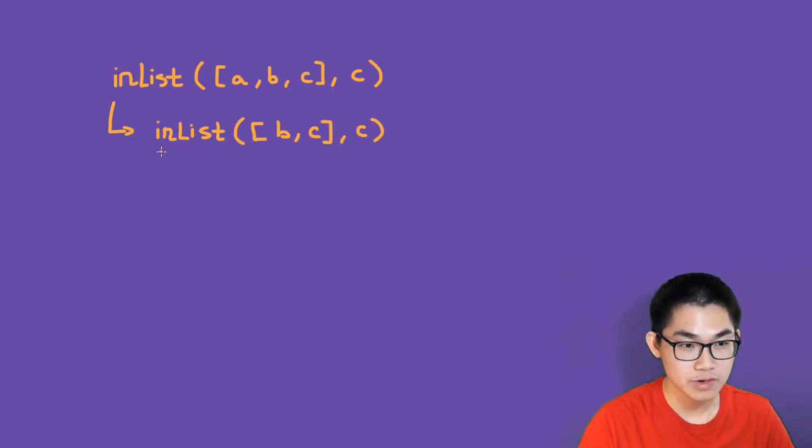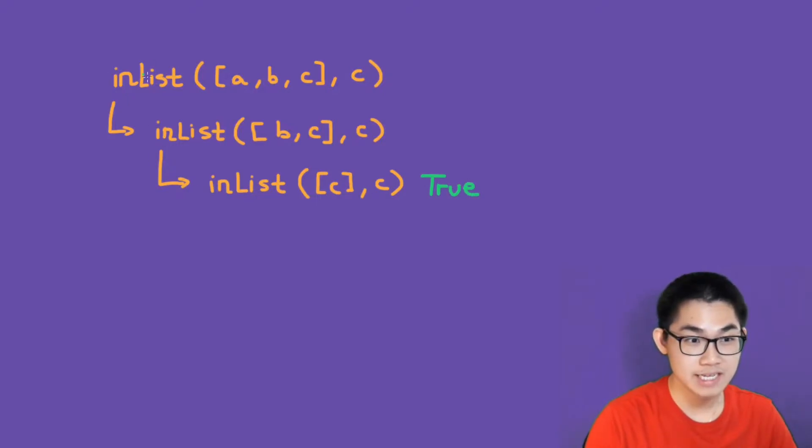Now it sees that c is indeed the same as this c. So this will return true. And then going up the recursion tree, the result of this one will be true.